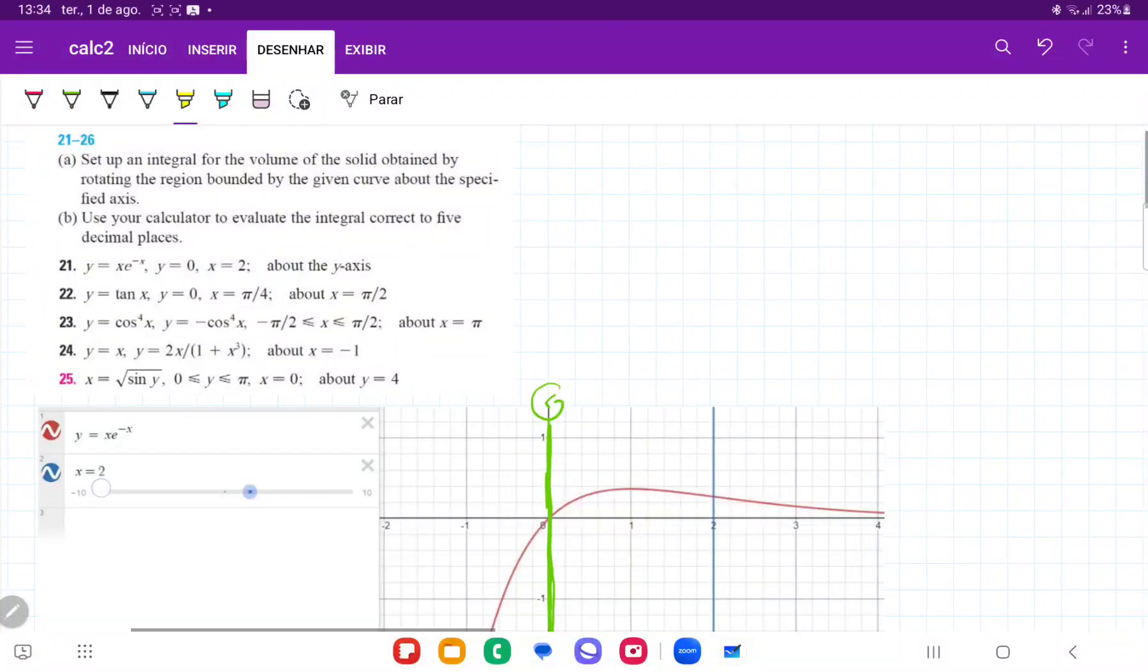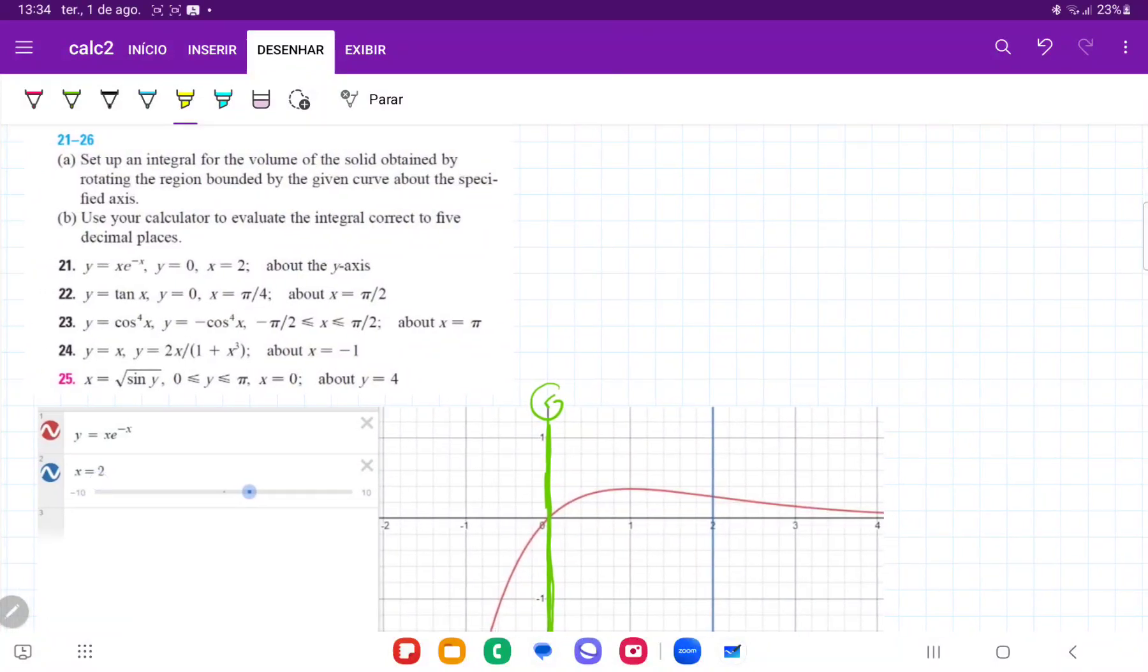So for number 21, they want us to take the area bounded between these two curves, so I've put it in a graphing calculator.